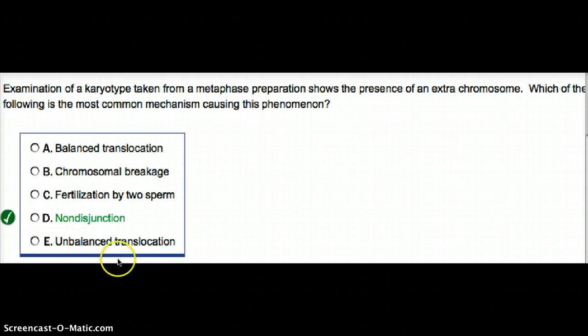Unbalanced translocation is when there is an exchange of chromosome between non-homologous chromosomes but there is a net gain or net loss of chromosome. That is unbalanced translocation.